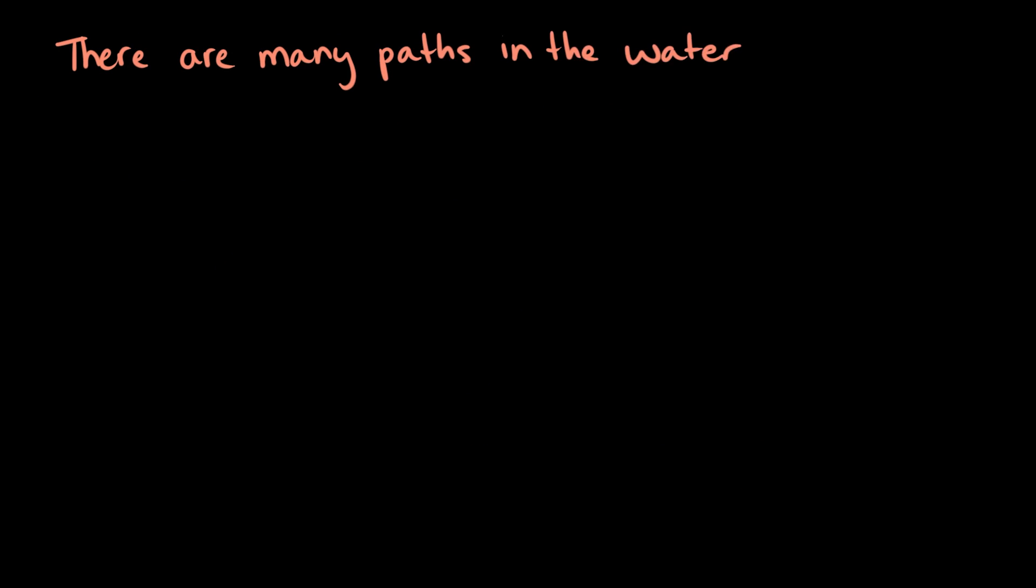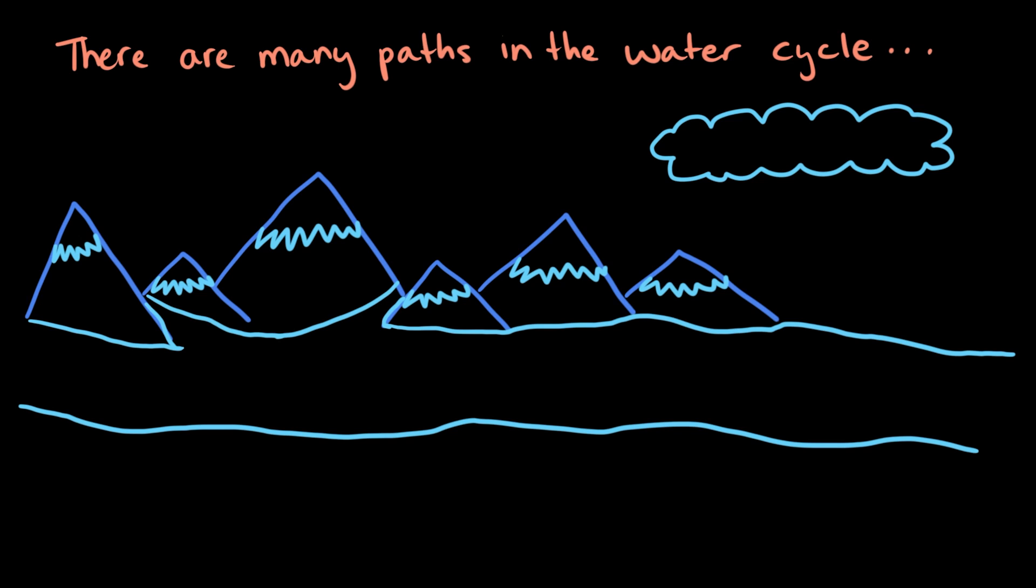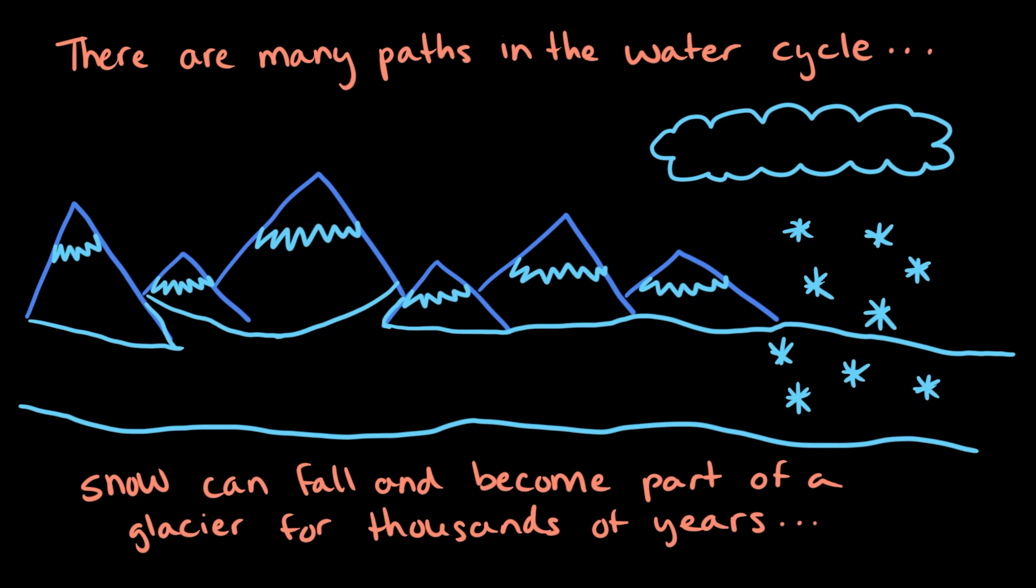But that's just one path water can take through the water cycle. It's like a choose-your-own-adventure. Instead of snow melting and running off into a river, the snow could become part of an icy, cold glacier and stay there for a long, long time, for thousands of years.